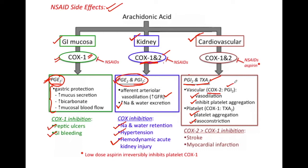When prostacyclins are inhibited, there will be vasoconstriction and platelet aggregation, resulting in an increased chance of stroke and myocardial infarction. Whereas COX-1 inhibitors inhibit thromboxane A2, which causes platelet aggregation and vasoconstriction.